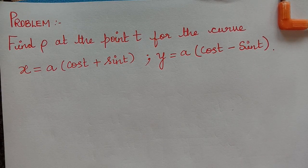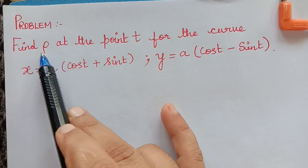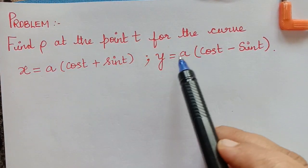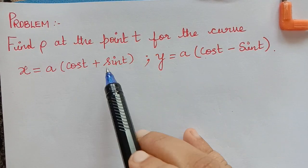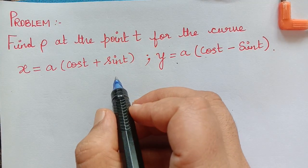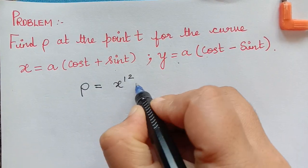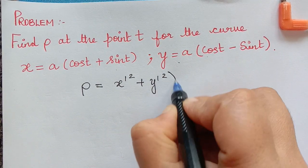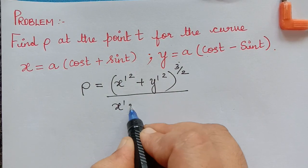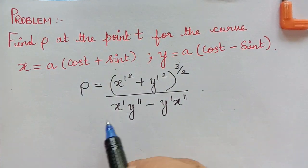Dear students, under the topic radius of curvature, we have a question which says: find ρ, the radius of curvature at the point t for the curve x equals this and y equals this. We observe that the equations given are in parametric form, so the formula for radius of curvature in the parametric form is given by ρ = (x'² + y'²)^(3/2) divided by (x'y'' - y'x'').